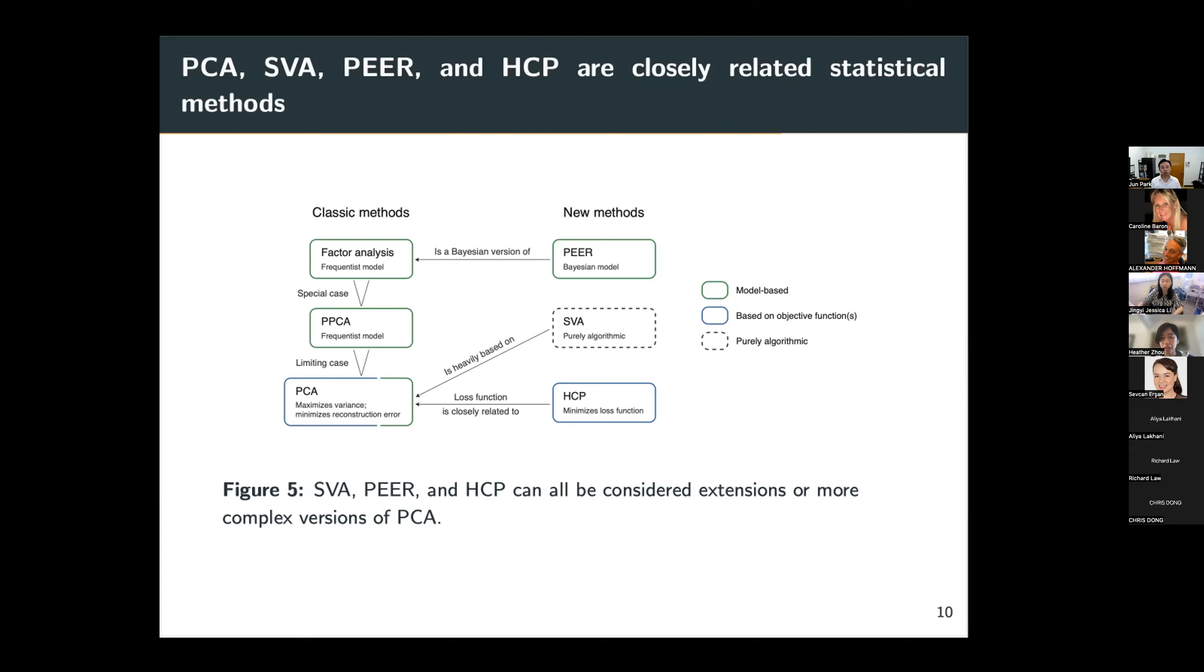HCP is defined by minimizing a loss function. And the loss function is closely related to the minimum reconstruction error loss function of PCA. So these methods are all connected in such a way.